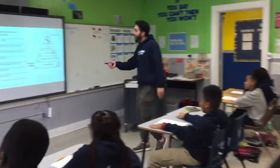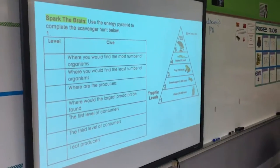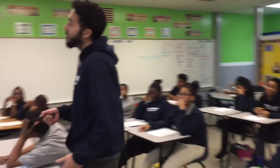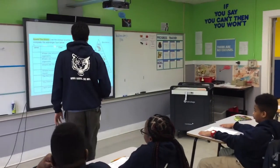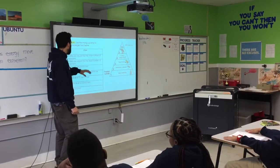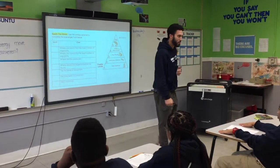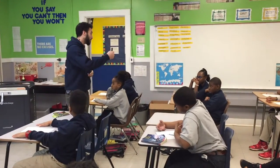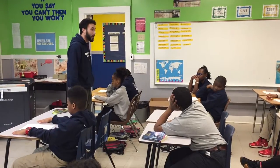On the board you have two things. You have clues that ask you to identify the location of different organisms on this energy pyramid. On the test, I noticed we were confusing levels of organisms and classifications — our consumers, our producers, our decomposers — with the different levels on this pyramid. I'm going to have you use these clues to find which level we're talking about. For example: where you would find the most number of organisms — tell me just what level it is: level one, two, three, four, or five? Do that for all six of them. You have one minute. Ready, set, go.